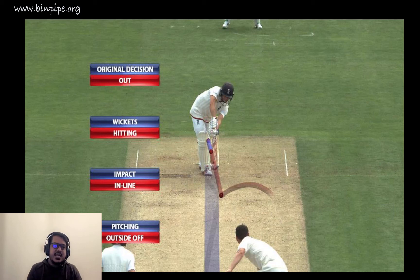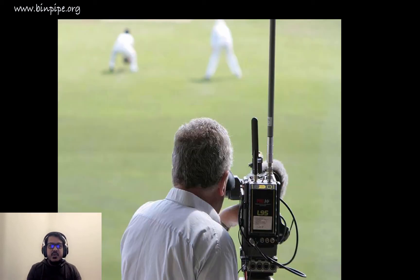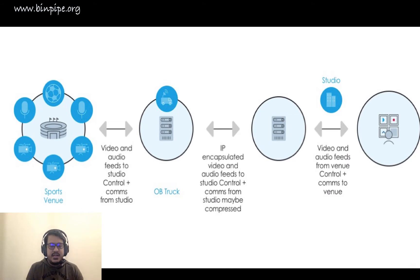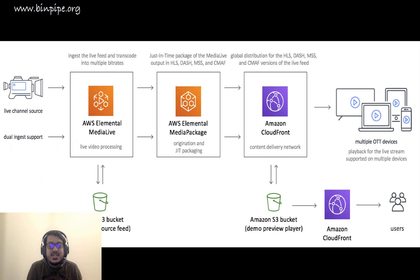Apart from cameras, there are other equipments like the Snickometer, which detects whether the ball traveling from the batsman touched the bat or the pad — crucial for third umpire decisions on caught-behind and LBW calls. Now, once the captures are made, how is that going to be broadcast live? How is video from all these different cameras mixed and provided to viewers in real time? Stay tuned — I'll tell you more about what happens after the videos are captured.